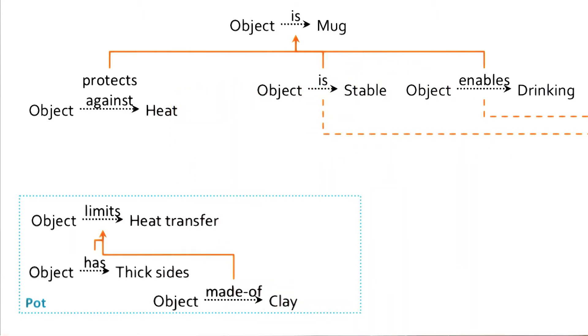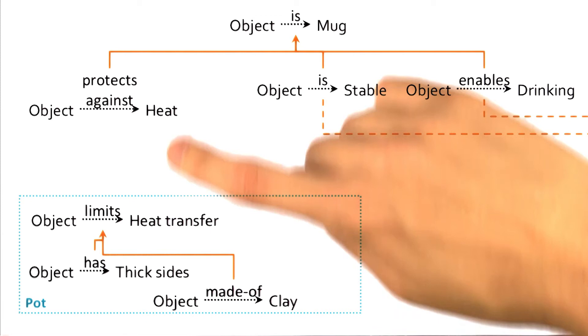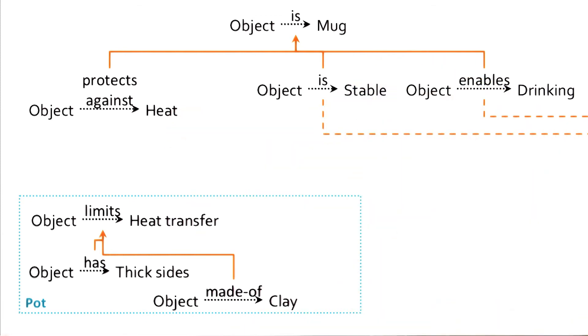So while for my definition of pot, I can abstract that because my new object has thick sides and is made of clay, it limits heat transfer, I can't make that last connection to protecting against heat.